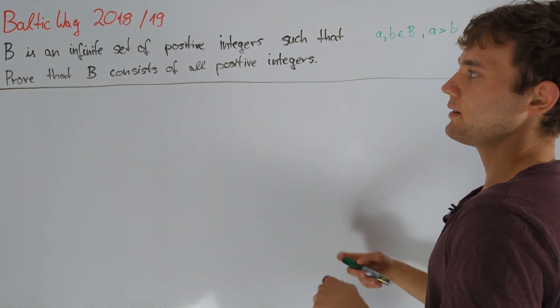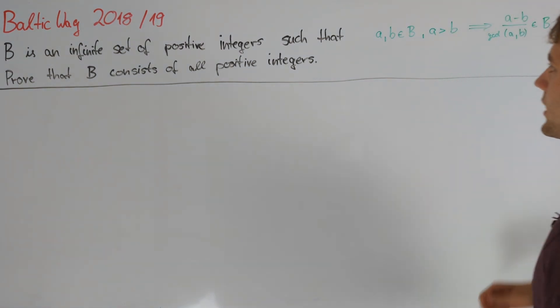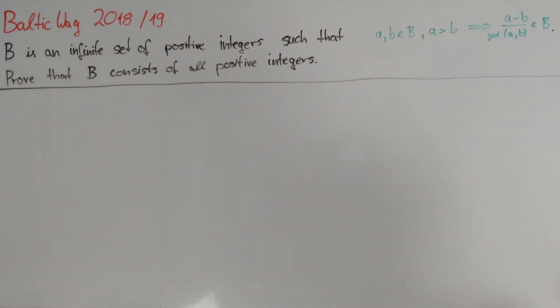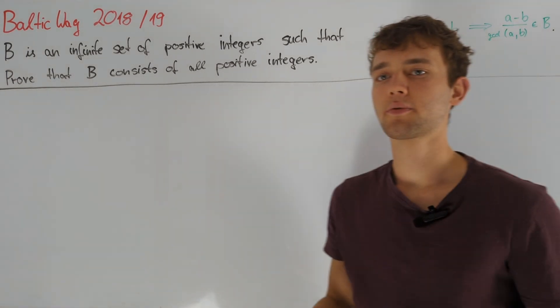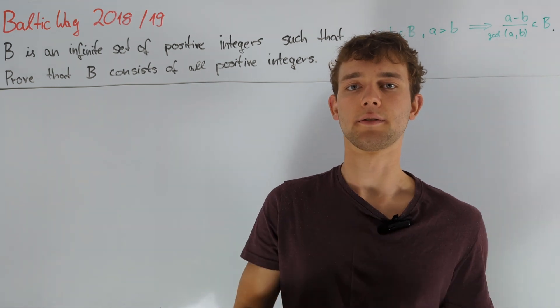We are given an infinite set of positive integers B, such that for every numbers a and b in B, with a greater than b, we have that also the number a minus b divided by the greatest common divisor of a and b is contained in B. We are asked to prove that this condition implies that B consists of all positive integers.